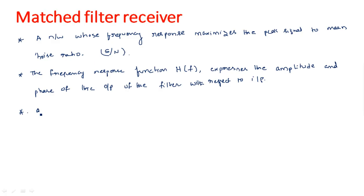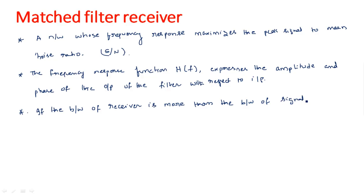If the bandwidth of the receiver is more than the bandwidth of the received signal — meaning the actual signal bandwidth is less than the receiver bandwidth — then along with the original signal, unnecessary noisy components will also enter into the receiver. So noise will also enter the receiver.